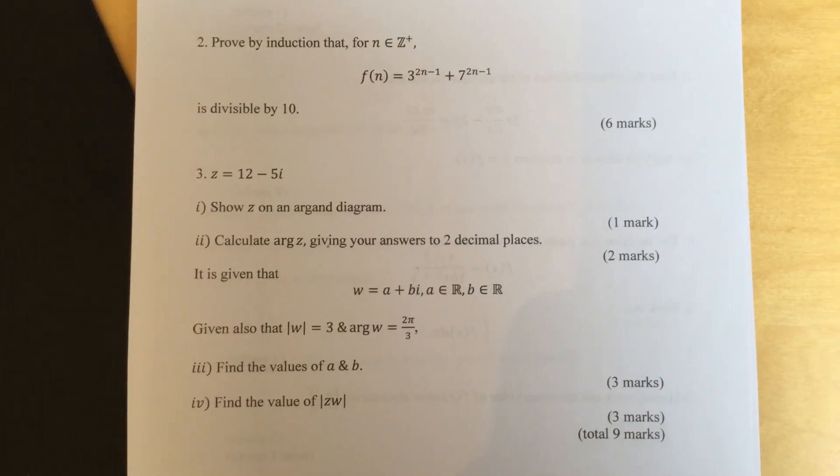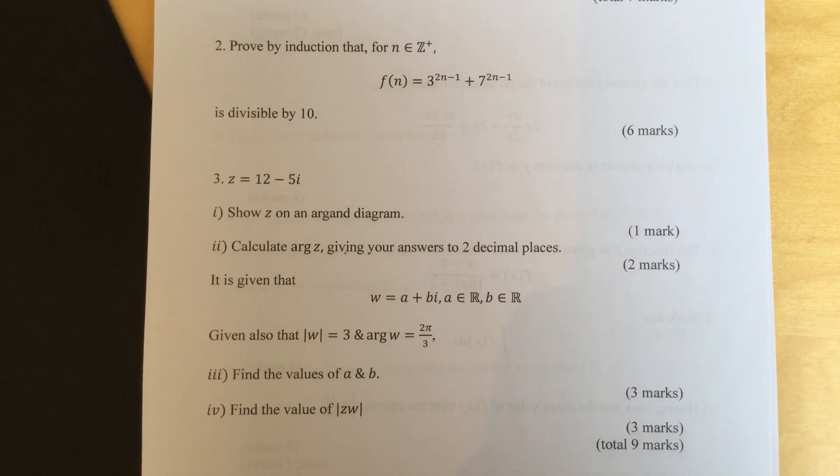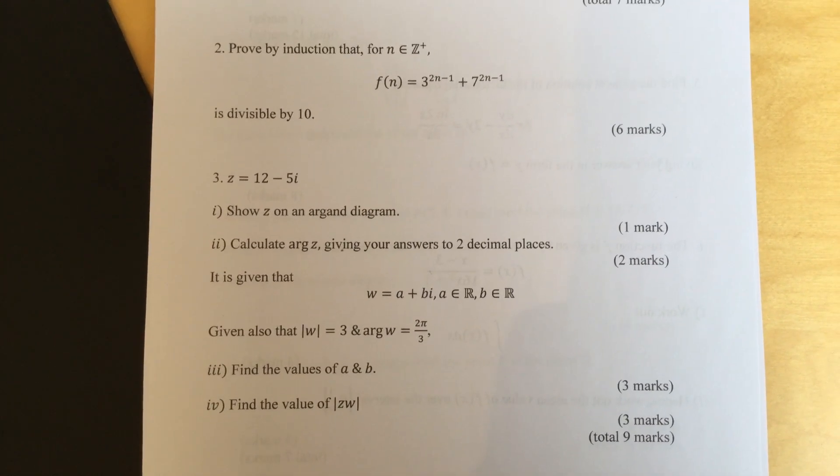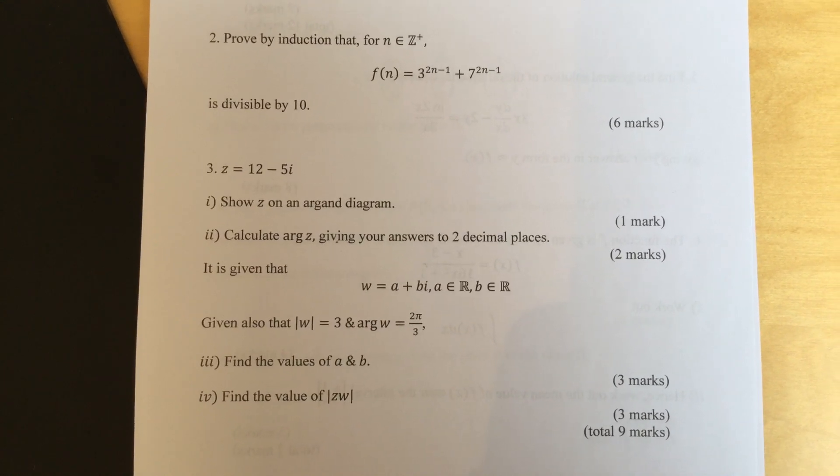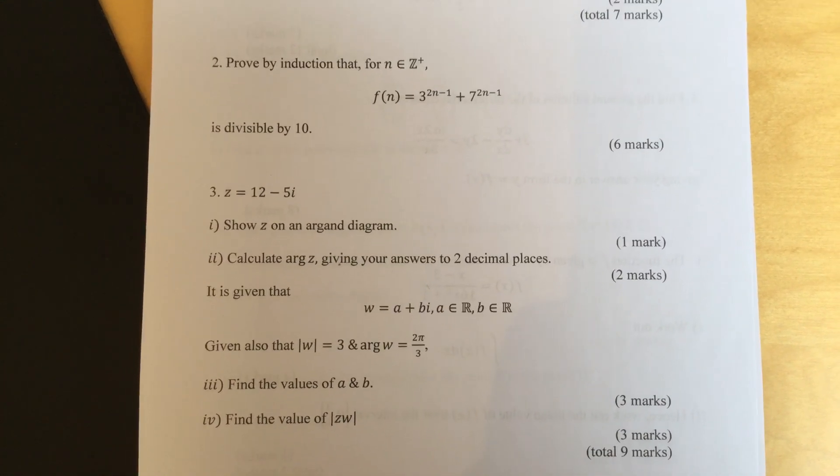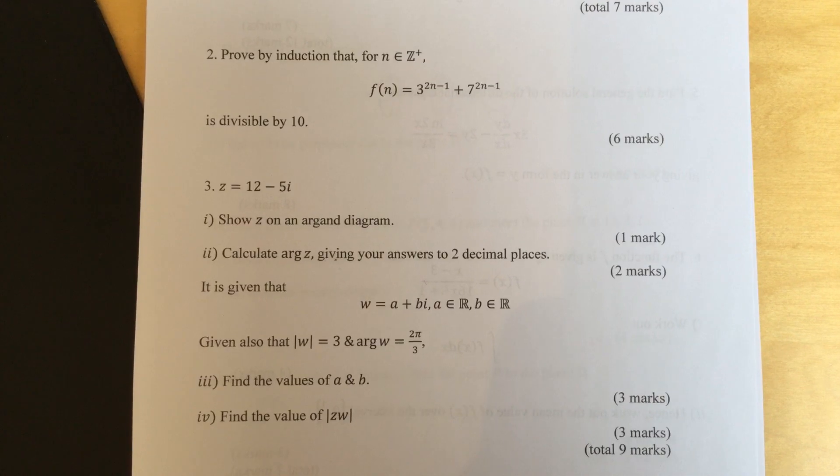Question three. z equals 12 minus 5i. Part one, show z on an Argand diagram. Part two, calculate arg z, giving your answer to two decimal places.